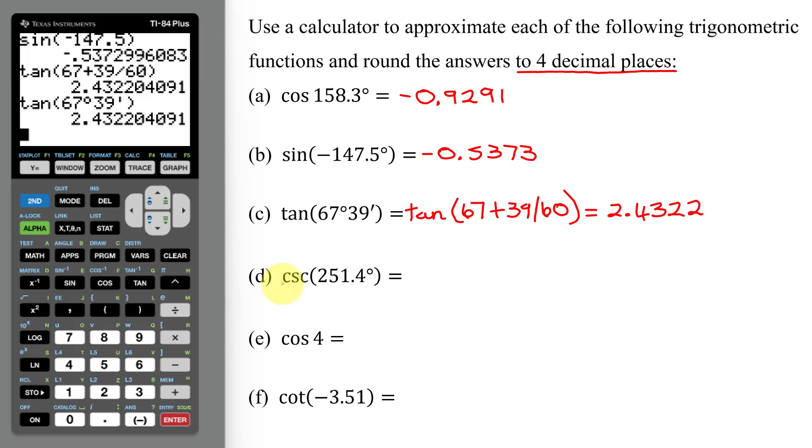In part D, I need to find the cosecant of 251.4 degrees. Unfortunately, there is no cosecant key on the calculator. And unfortunately, a lot of students think sine to the negative 1 is the cosecant key. No, this is the inverse sine function or the arc sine function. So the way we do this problem is remembering the cosecant function is 1 divided by the sine function.